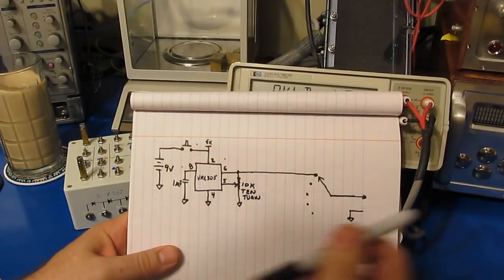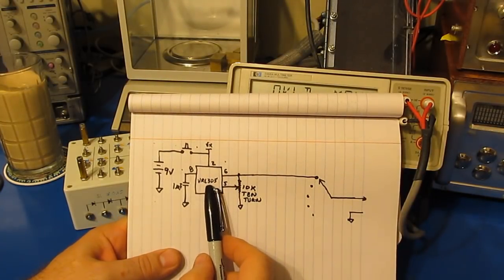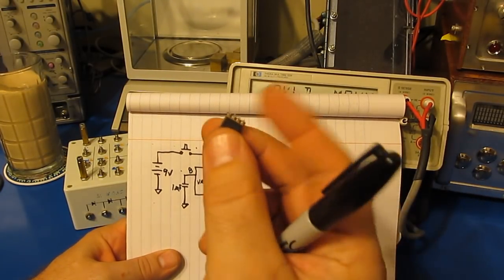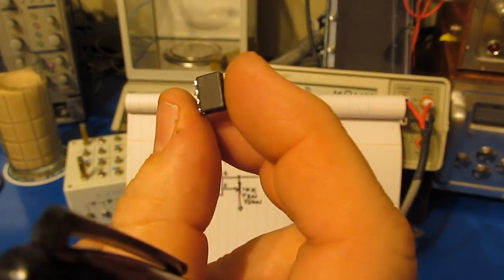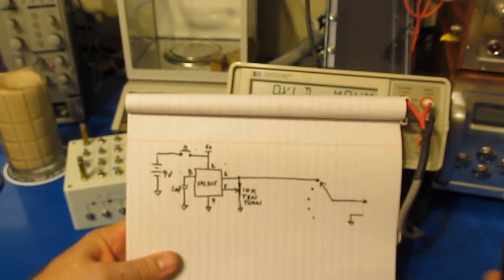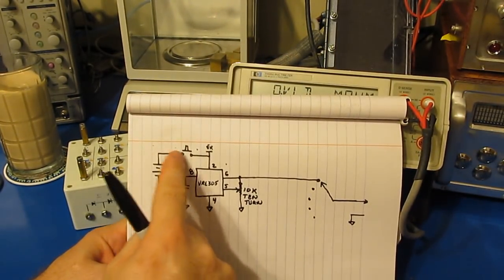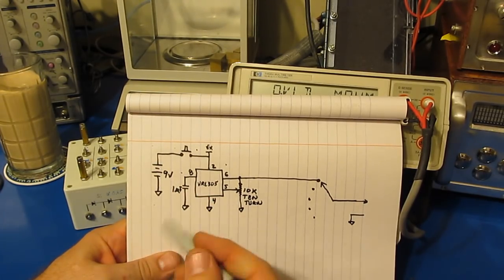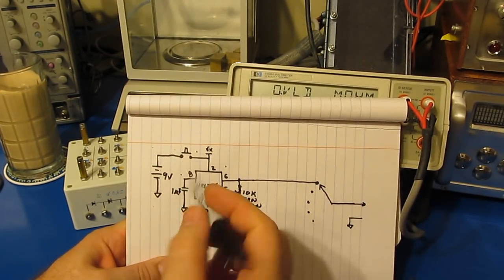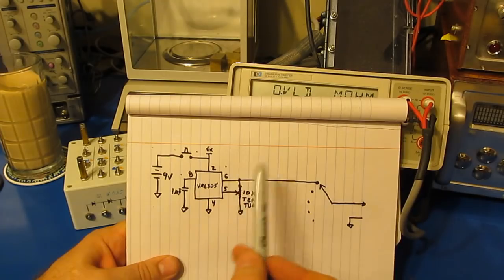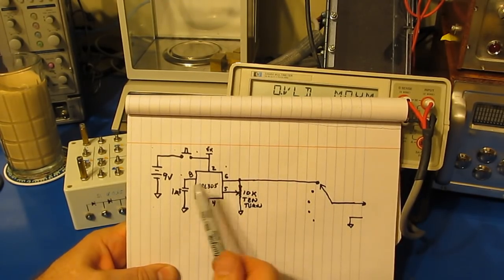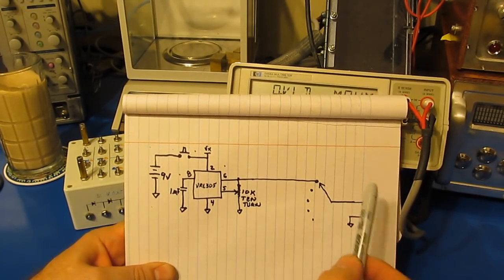So this is the schematic. I'm using a VRE305, this is made by Apex, this is a very precision 5 volt reference and it just runs off of a 9 volt transistor battery. So you have the push button that's located on the side of the box, you push that down it powers up the chip and basically we get our 5 volts out.